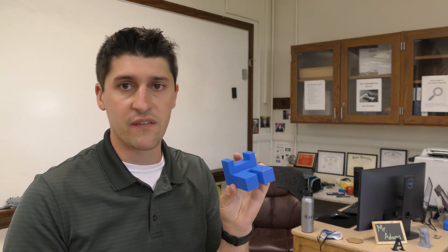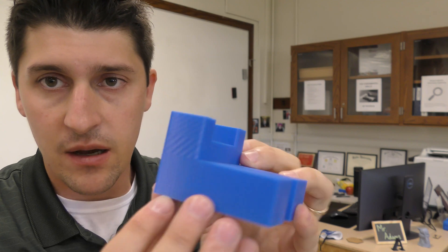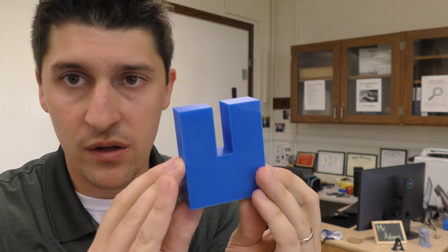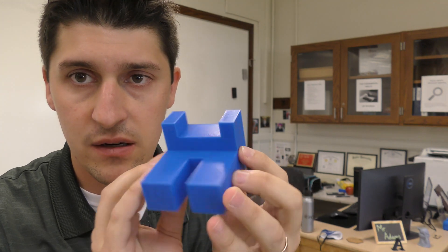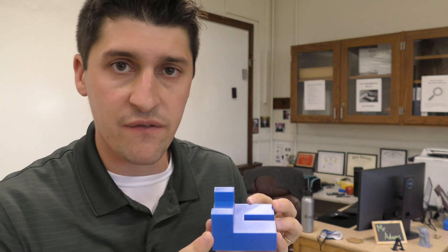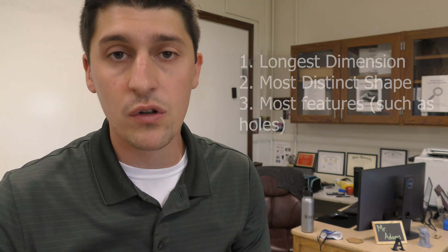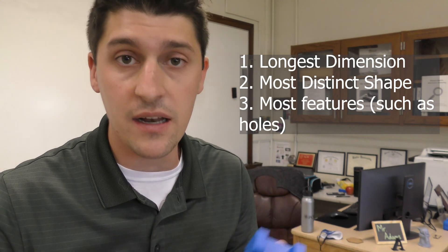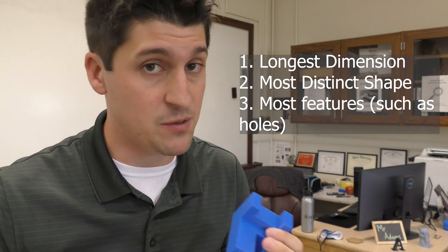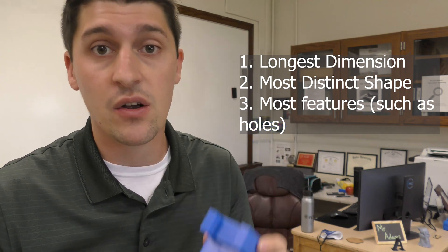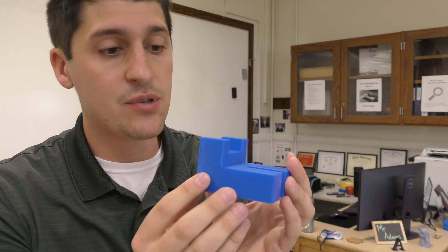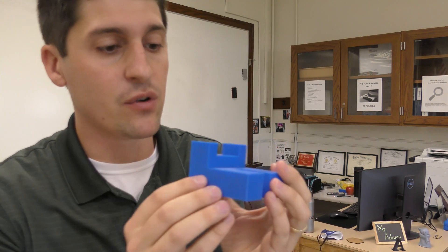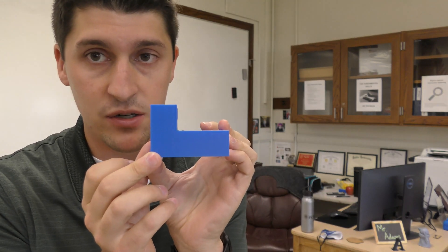The first thing we need to do is determine which view will be our front. This shape has a couple of different sides we can choose from. If we look at it here, there's three distinctive sides. Our rules for picking the best front view: rule number one is the longest dimension, rule number two is the most distinctive side, and rule three is the side that has the most specific shapes like holes or cutouts. When looking at this object, it makes the most sense to go with rule number one, the longest dimension. So this will serve as the front view of our object.